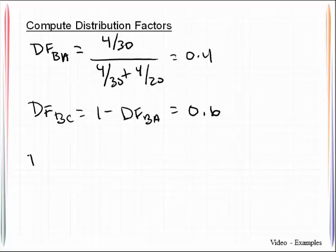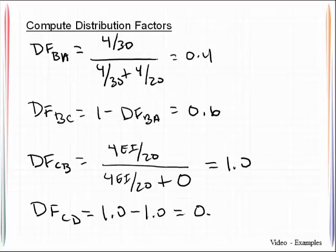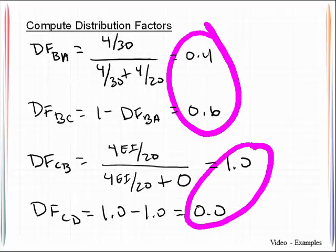Let's go on to joint C. DF CB is equal to the stiffness of CB divided by the total stiffness of the joint which is CB plus CD. That will be equal to 1.0. DF CD is equal to 1.0 minus 1.0 which is equal to 0.0. So let's just take a look here, sum up to be 1.0, sum up to be 1.0, sum up to be 1.0 so we are good on the distribution factors.